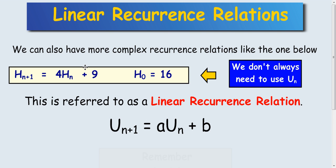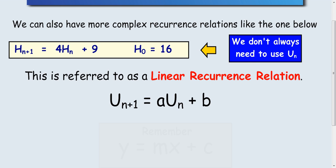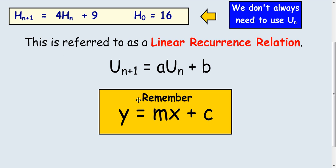This type of recurrence relation is referred to as a linear recurrence relation with a multiplier in front of H n and then add or subtract at the end. The reason it's called a linear recurrence relation is because it's very similar to the straight line y equals mx plus c.